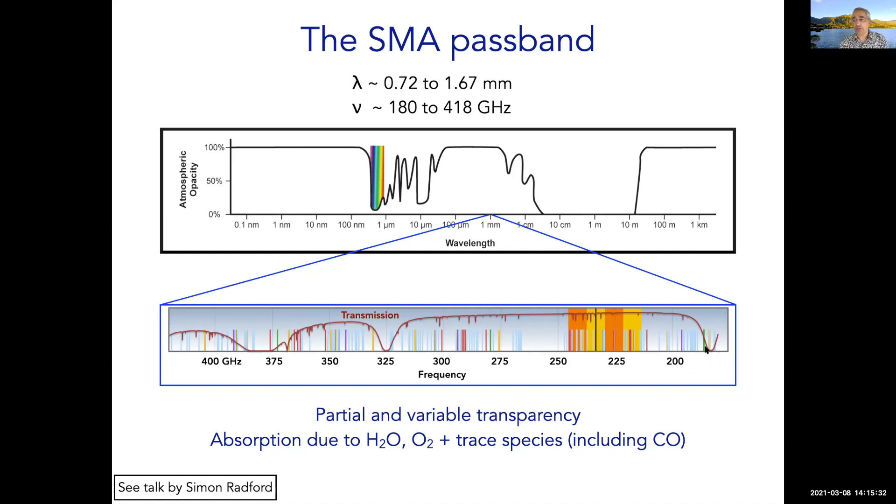You can also see there are regions where the transmission goes to zero or the atmosphere becomes fully opaque. This is generally due to water lines or oxygen lines and other trace species that produce variable transmission, both in wavelength and in time. When there is greater levels of water in the atmosphere, the transmission is lower. When we observe in these bands, we need to understand the transmission of the atmosphere and calibrate that out.